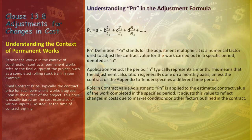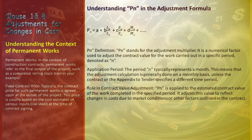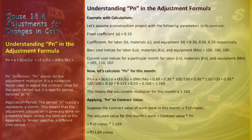The typical monthly calculation of PN ensures ongoing adjustments in line with cost changes. PN adjusts the value of work completed in a defined period, often monthly. For instance, if work done in January is valued at $100,000, PN adjusts this amount to align with current economic conditions.